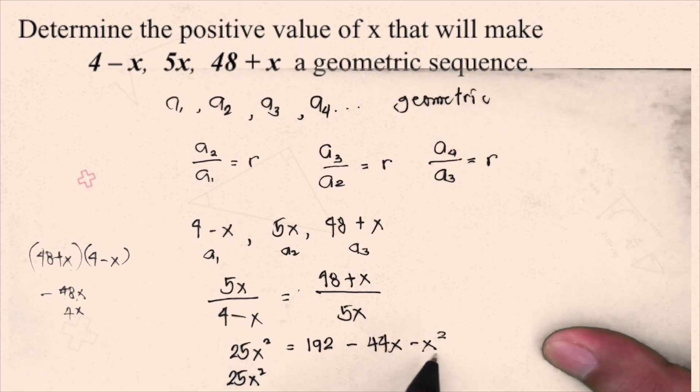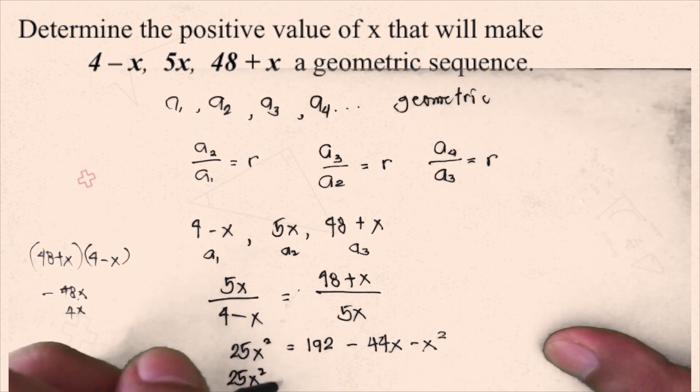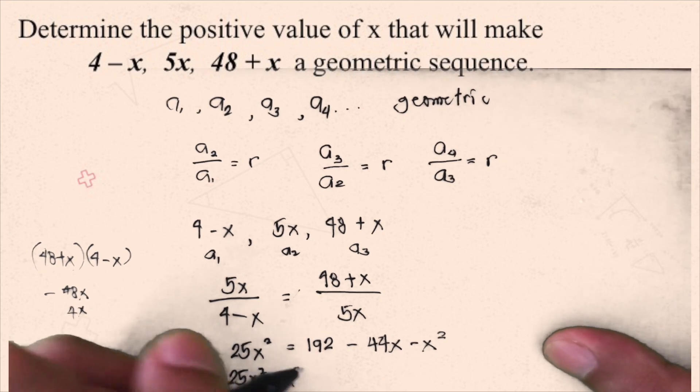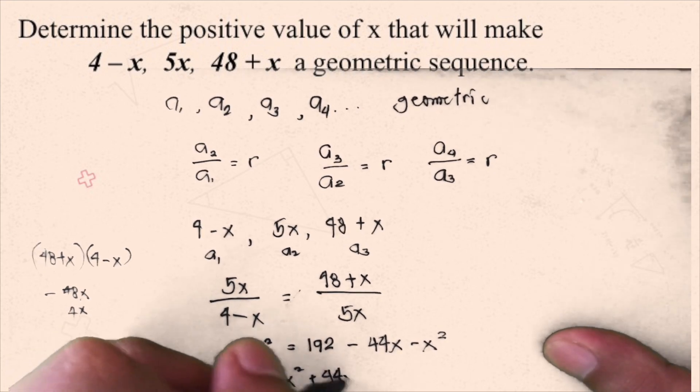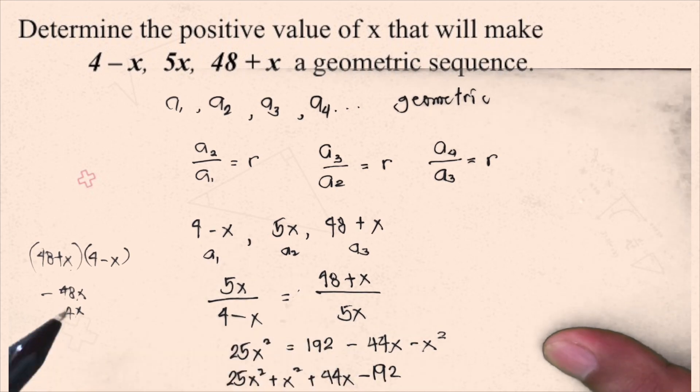25x squared, transpose everything here to the other side, plus 44x minus 192 equals 0.